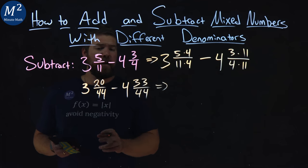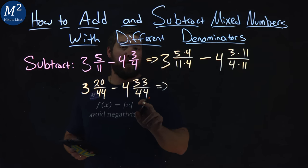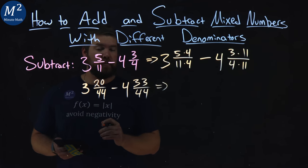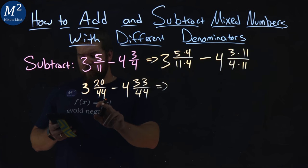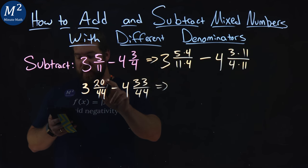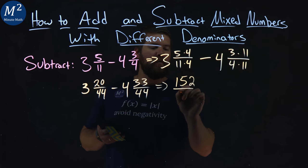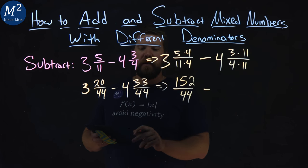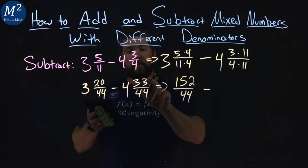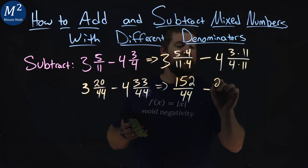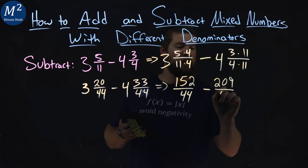So, one of the techniques we can do here is actually make both of these improper fractions. It makes it a little easier to subtract here. So, 44 times 3, plus 20, comes out to be 152, over 44. Same thing here, 44 times 4, plus 33, is 209, over 44.